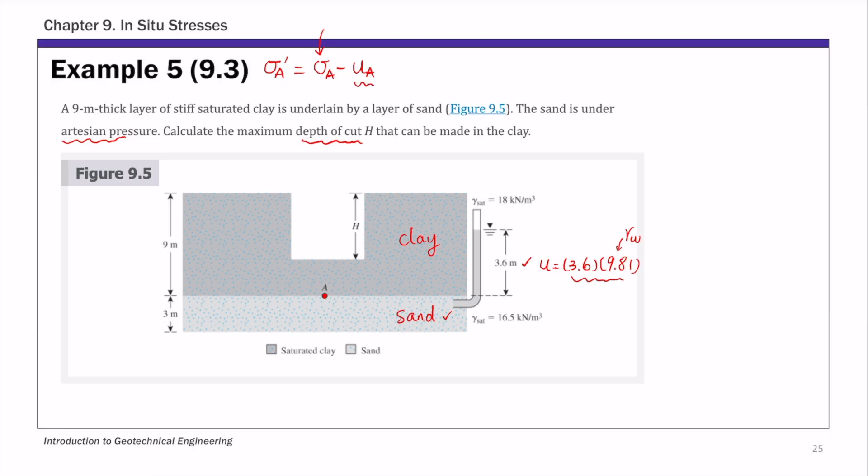And so the most critical point is when this effective stress equals zero. So point A is the most critical point because you're basically removing soil on top of point A. And at this point,